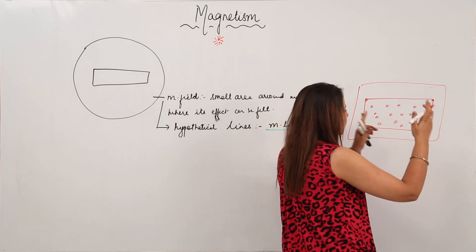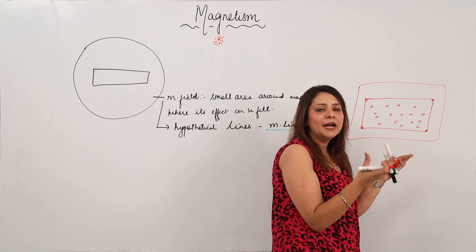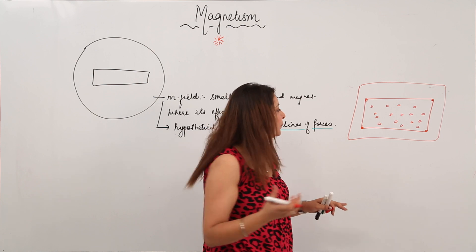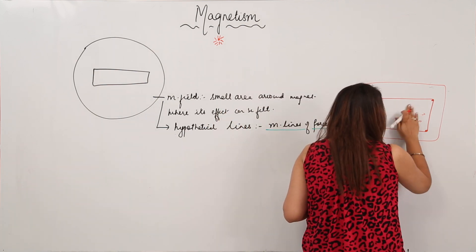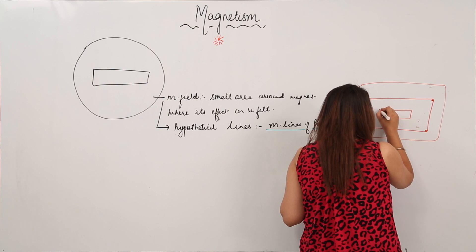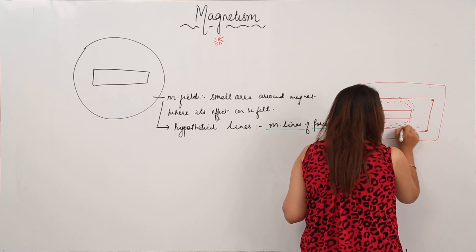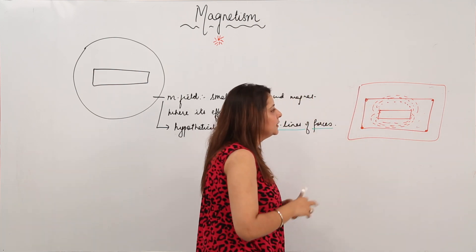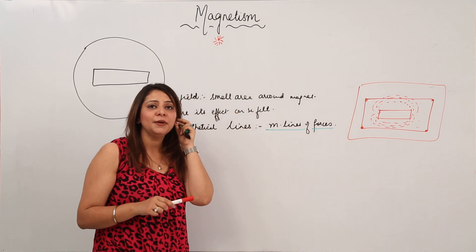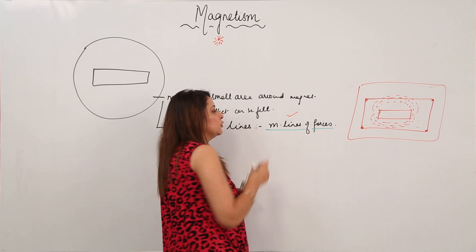Keep a bar magnet below the paper. When you put the bar magnet beneath it, you will see that the iron filings acquire a particular shape — they arrange themselves in a specific pattern following the field lines. So in order to study the magnetic field, since we cannot see it but can feel its effect through the iron filings arrangement, we consider imaginary lines called magnetic lines of forces.